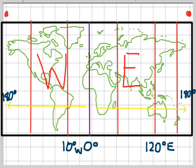This line at 180 degrees is called the international date line. And we'll look at that in a different video.